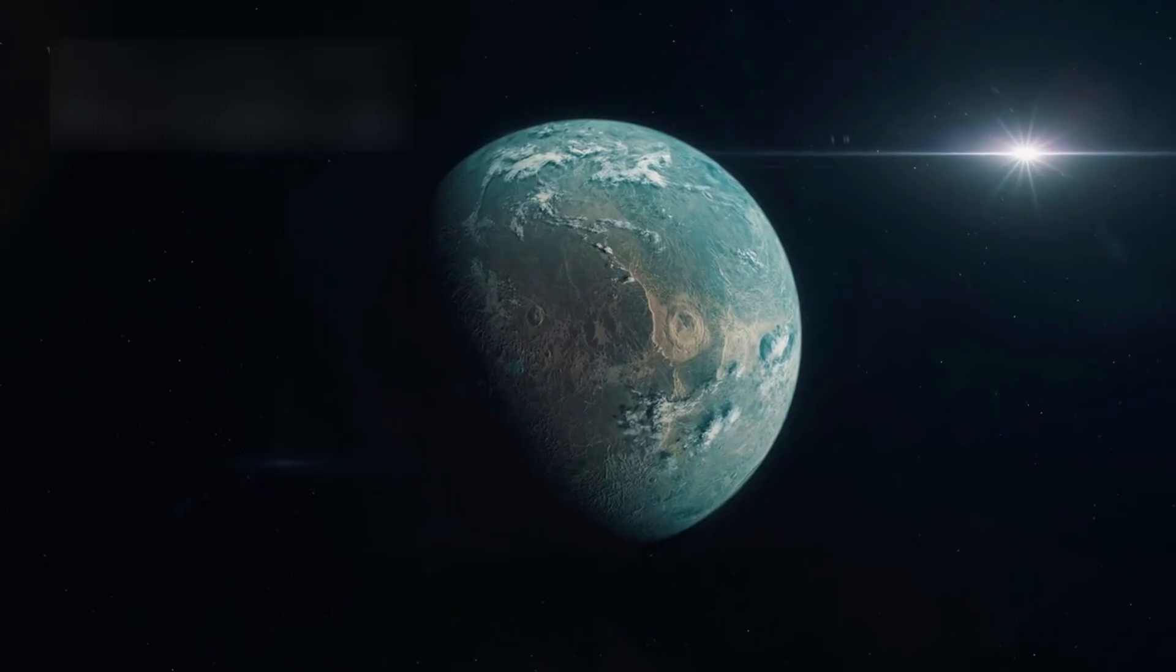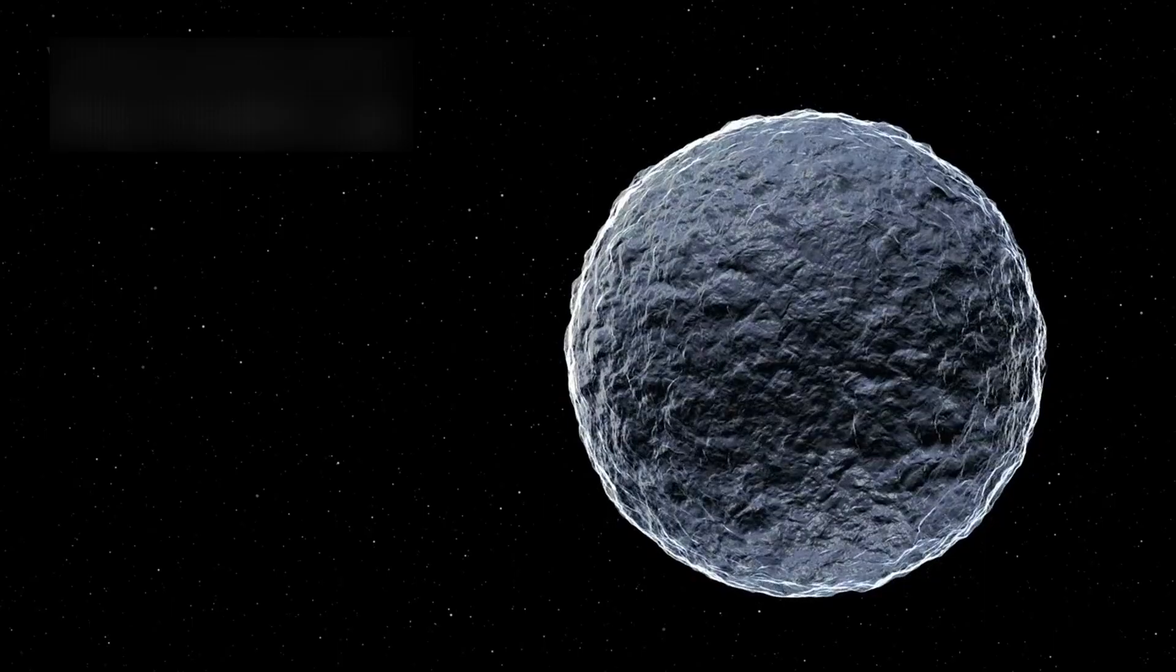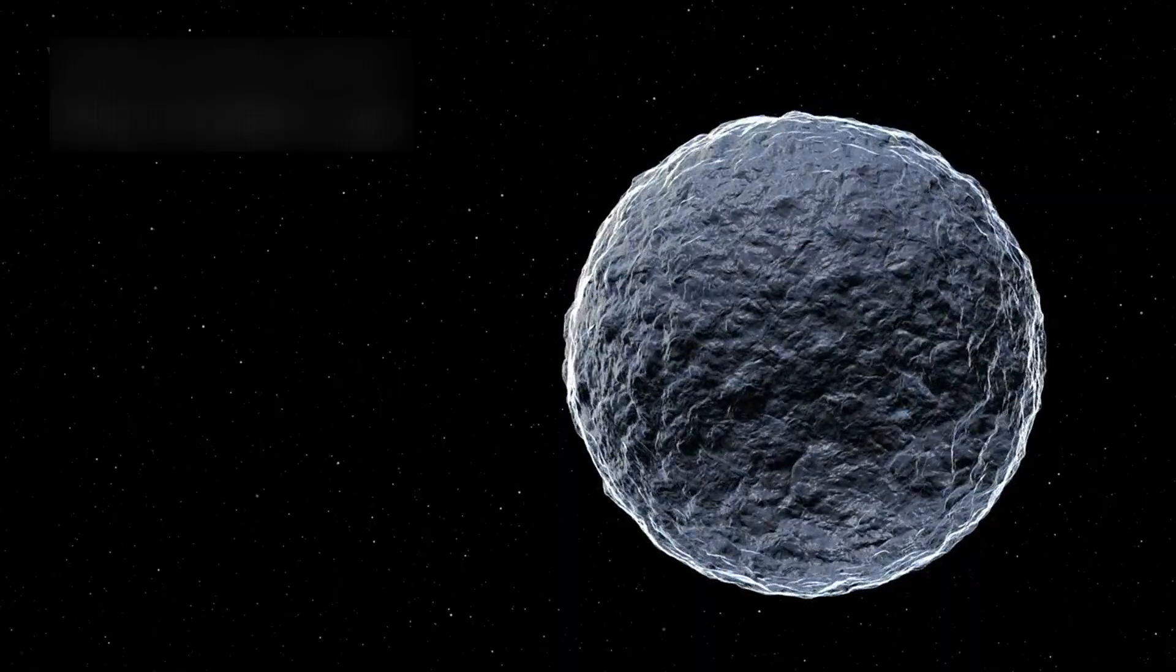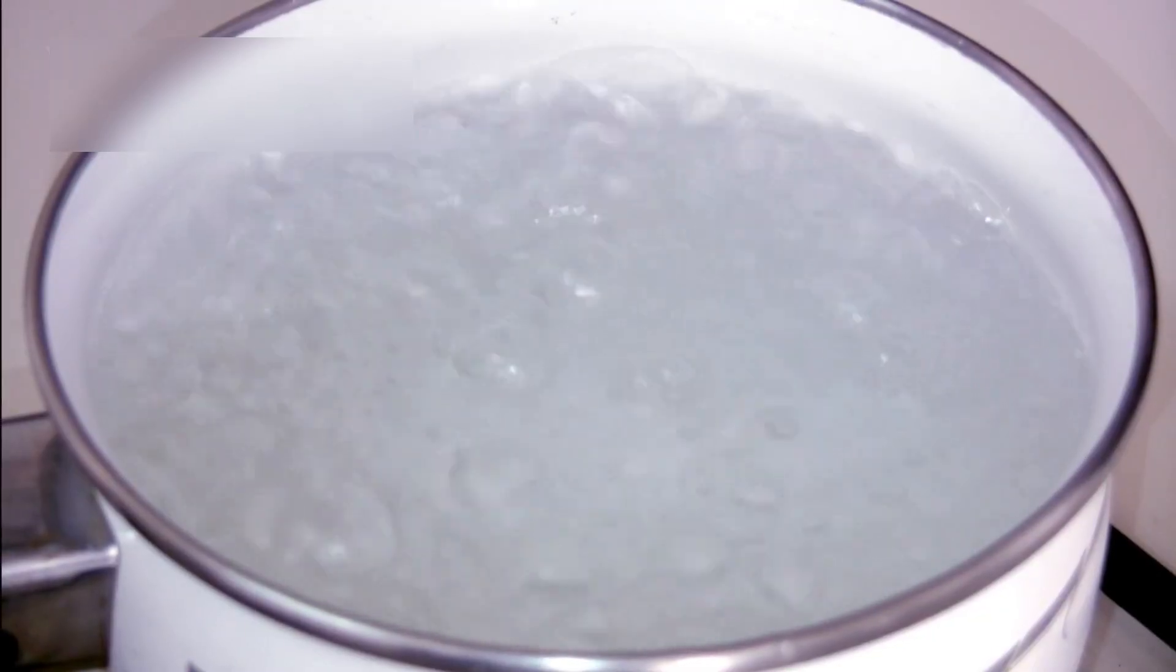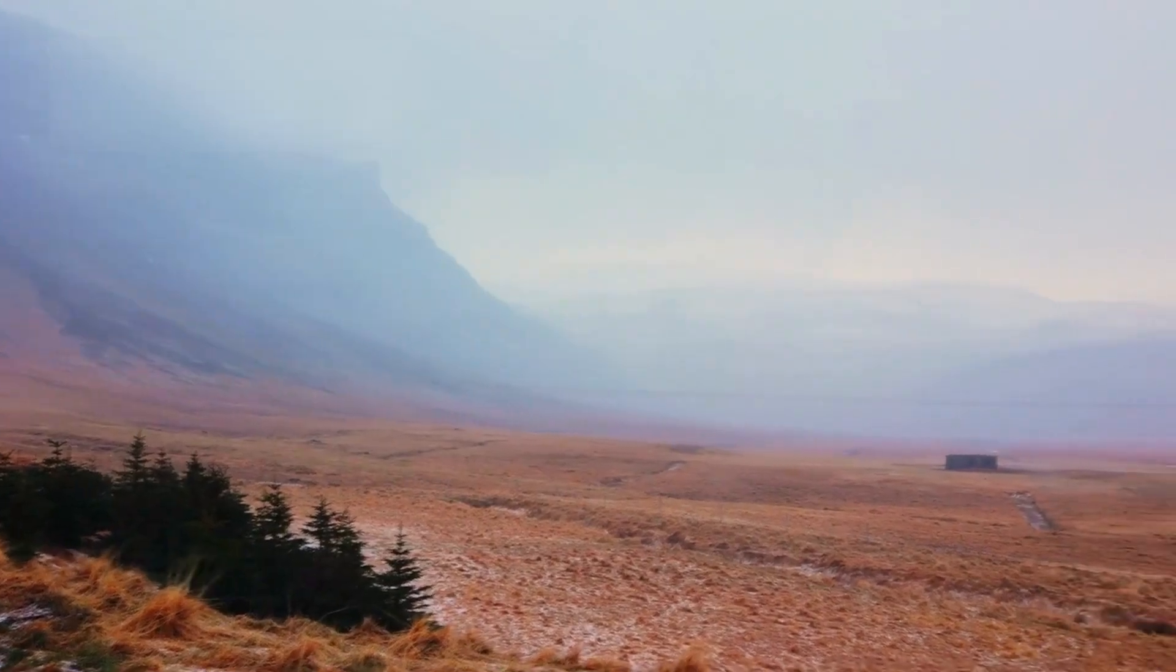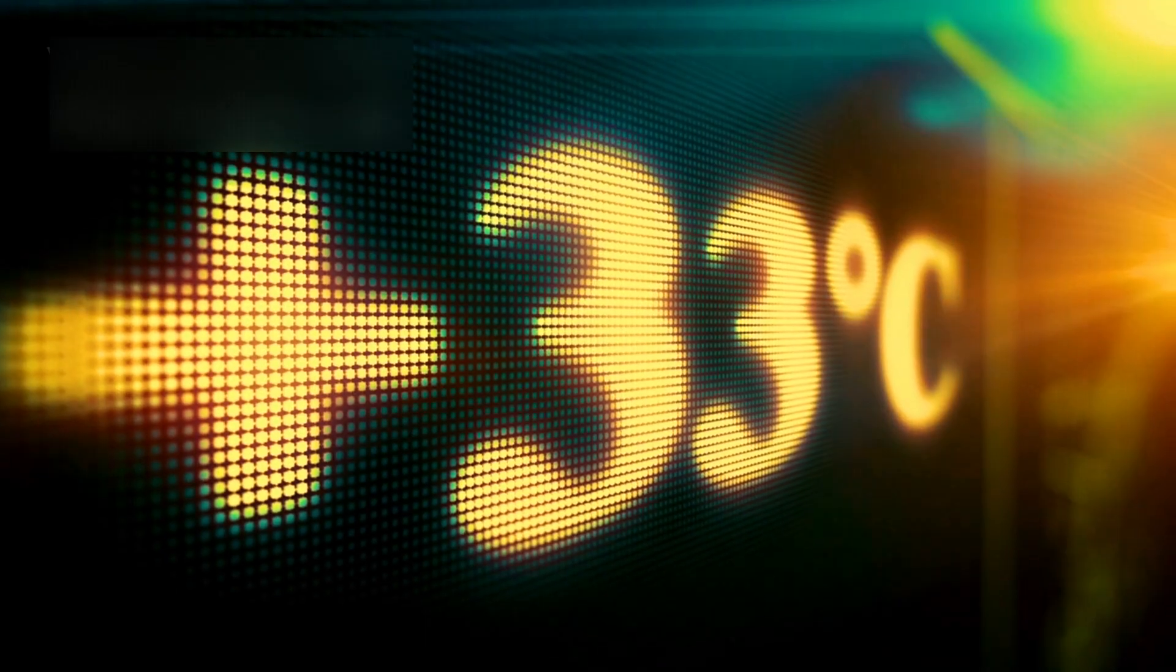Second, Hycean planets have wider habitable ranges. Earth-like planets must orbit within a narrow band where water remains liquid. Step too close to the star and the water boils away. Drift too far and it freezes. But a Hycean planet, with its insulating atmosphere and deep oceans, can remain habitable under a much broader set of conditions. Temperatures on some of these worlds could reach 200 degrees Celsius, nearly 400 degrees Fahrenheit.